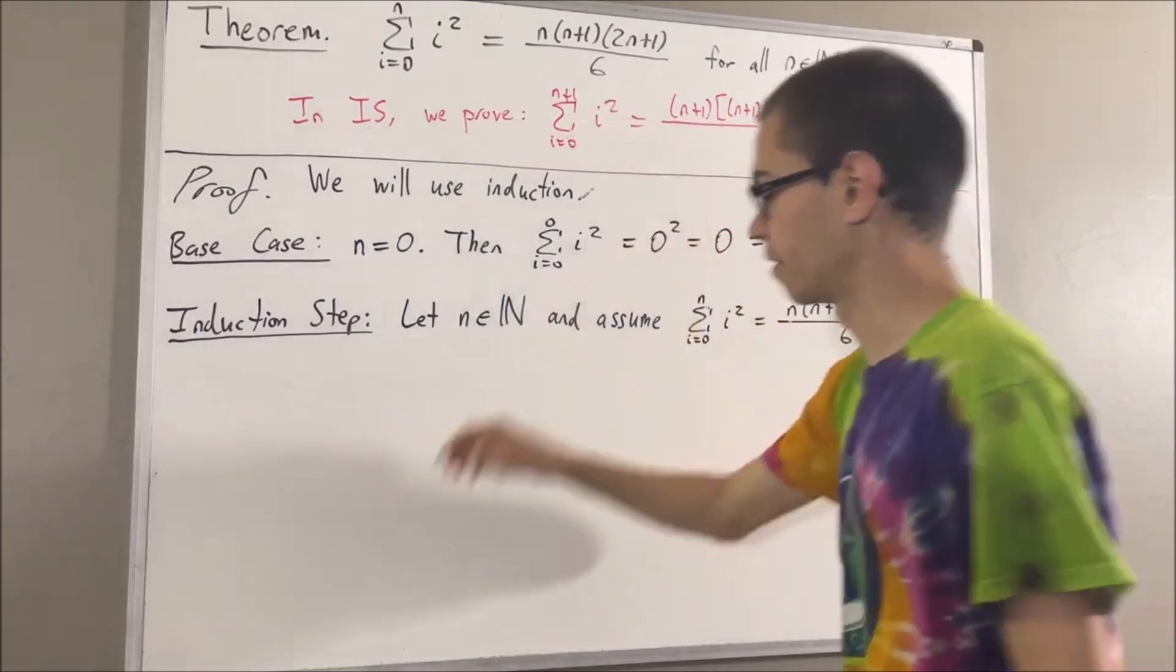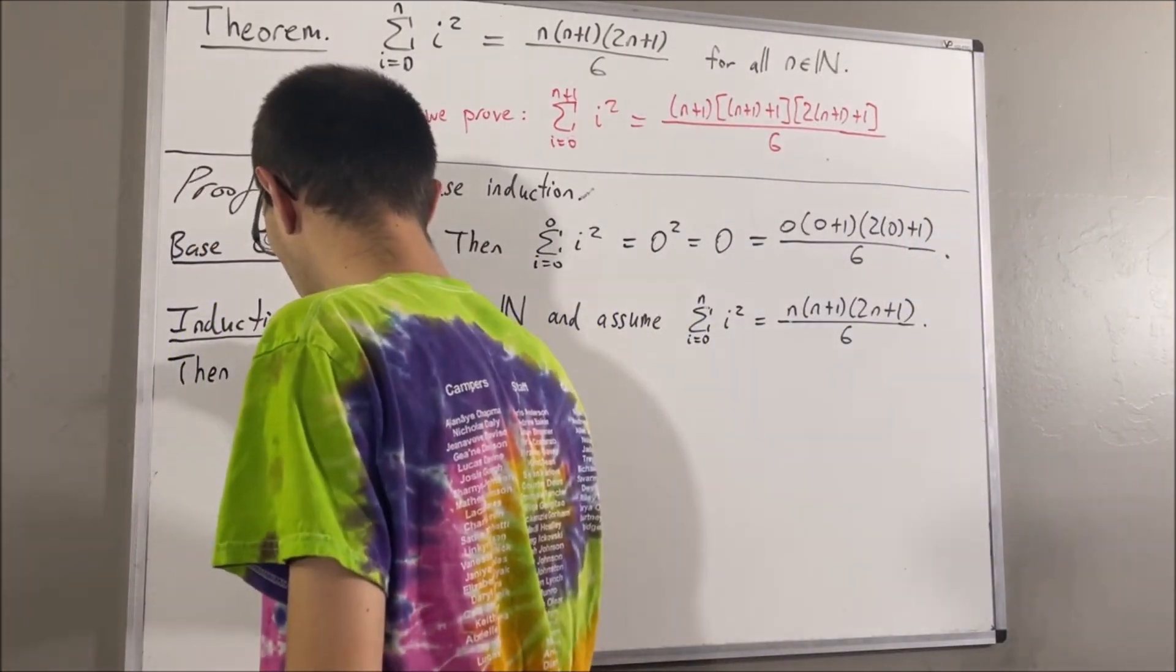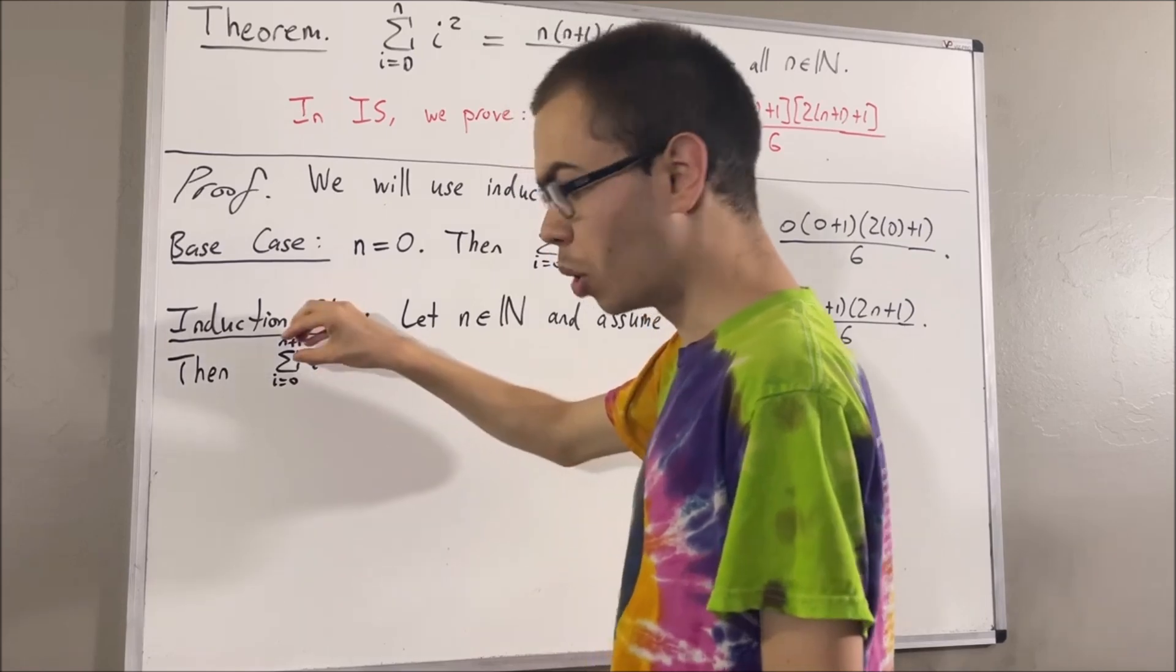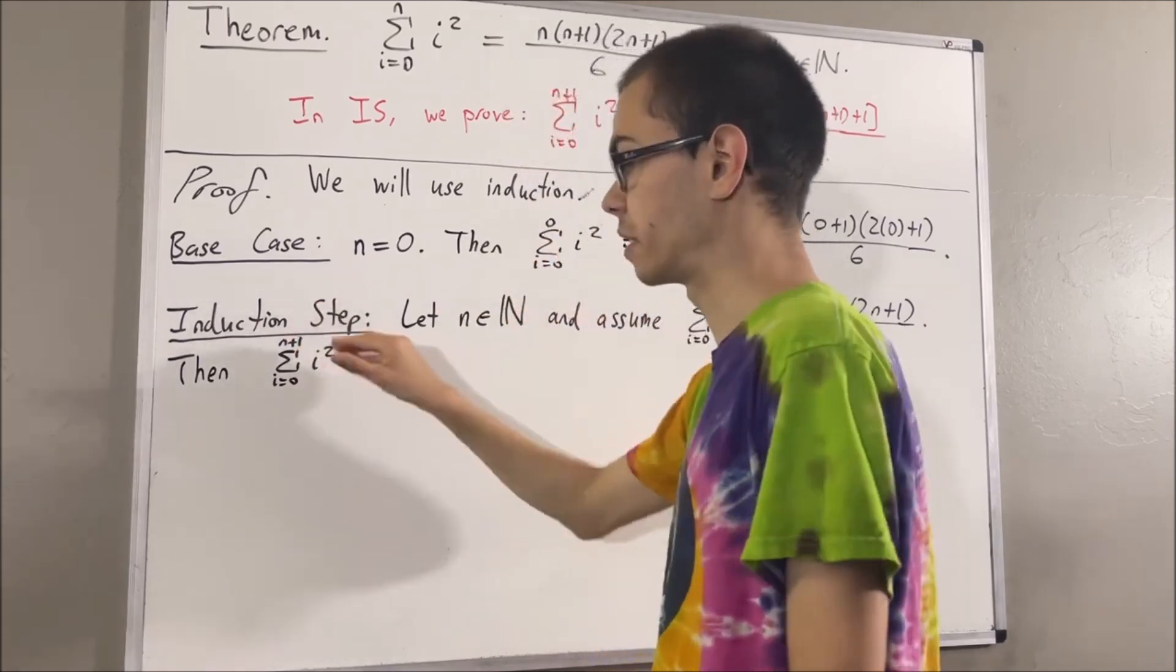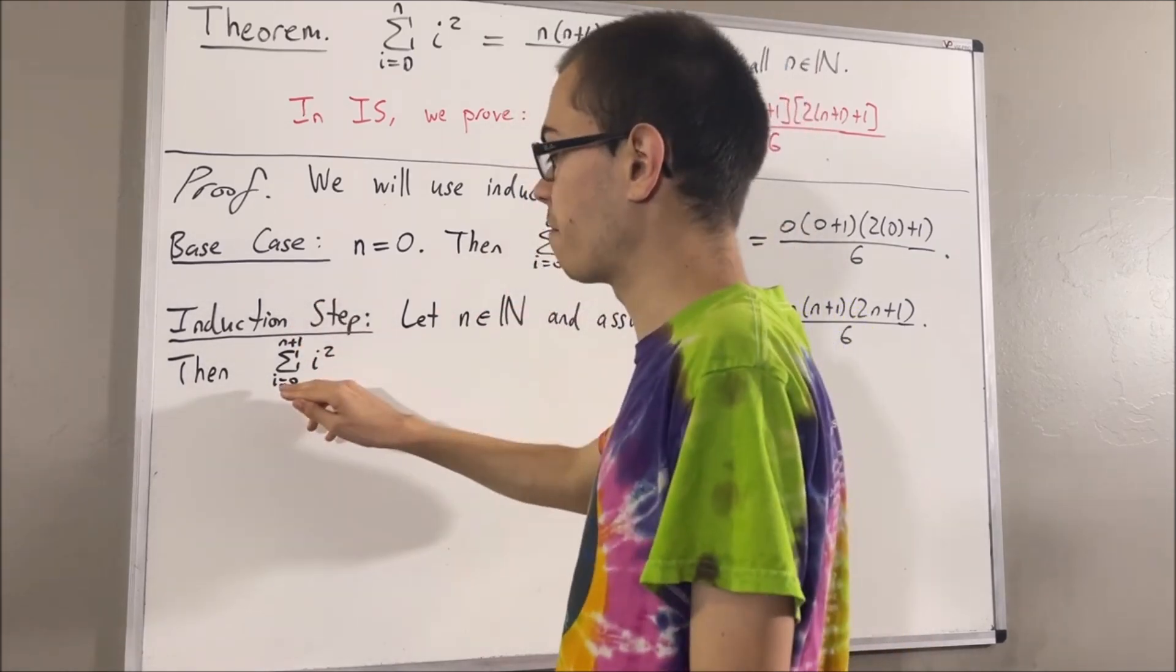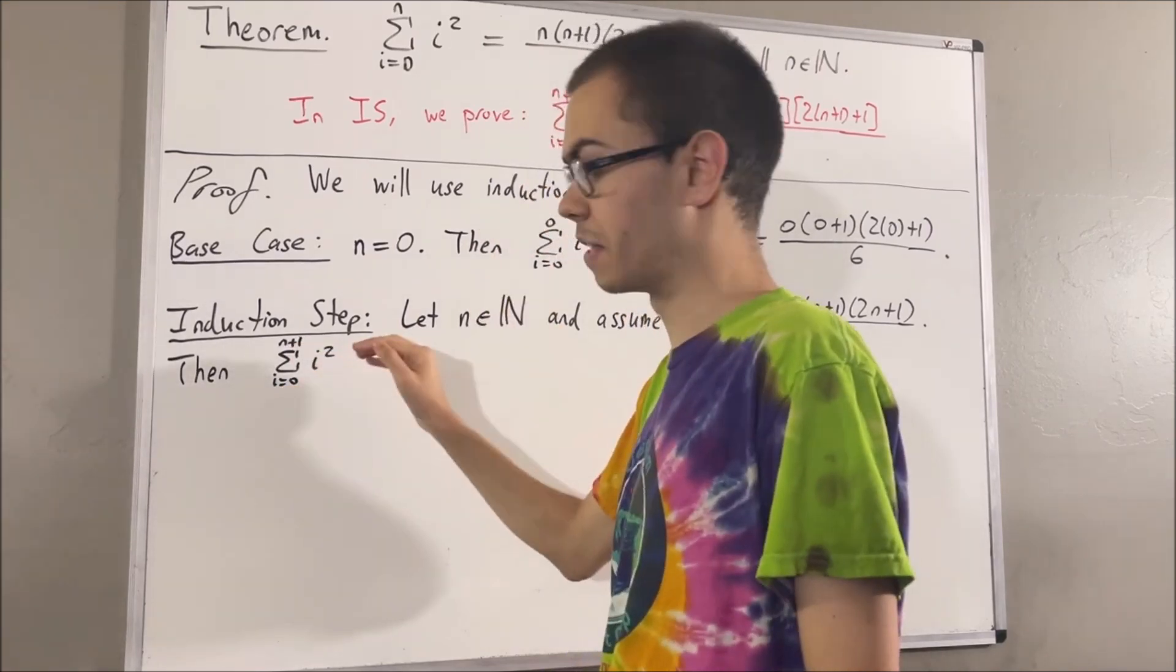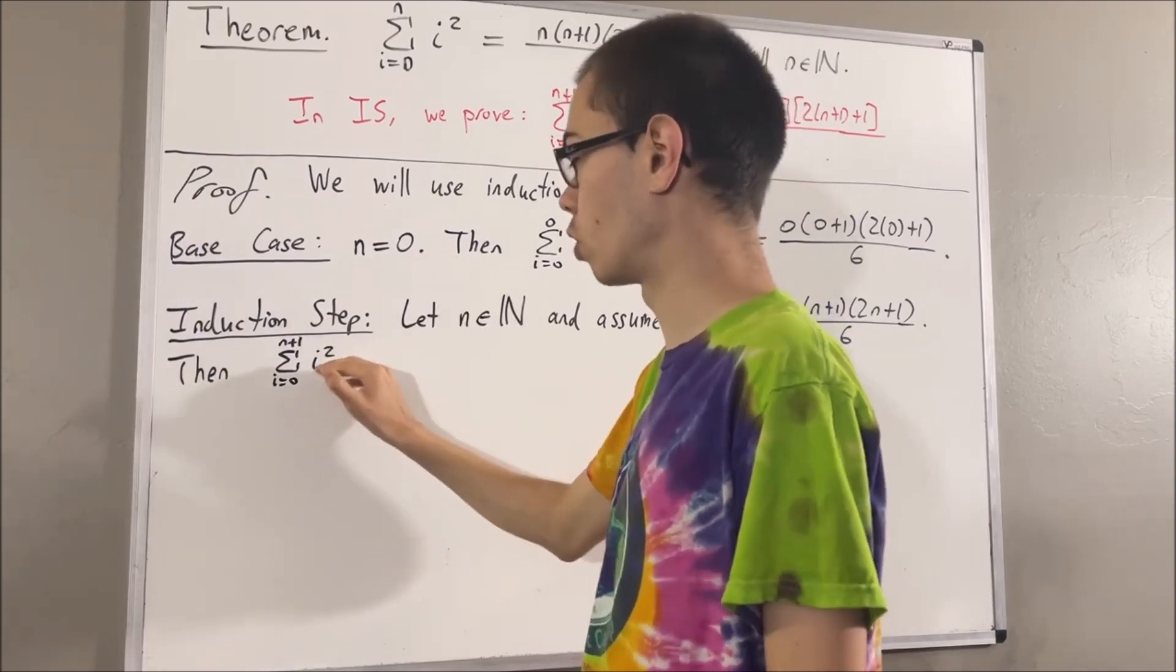Now, since n plus one is strictly greater than zero, we can pull away the n plus one term from this sum and rewrite it as the sum from i equals zero to n of i squared plus the n plus one term of this sum, which is n plus one squared.